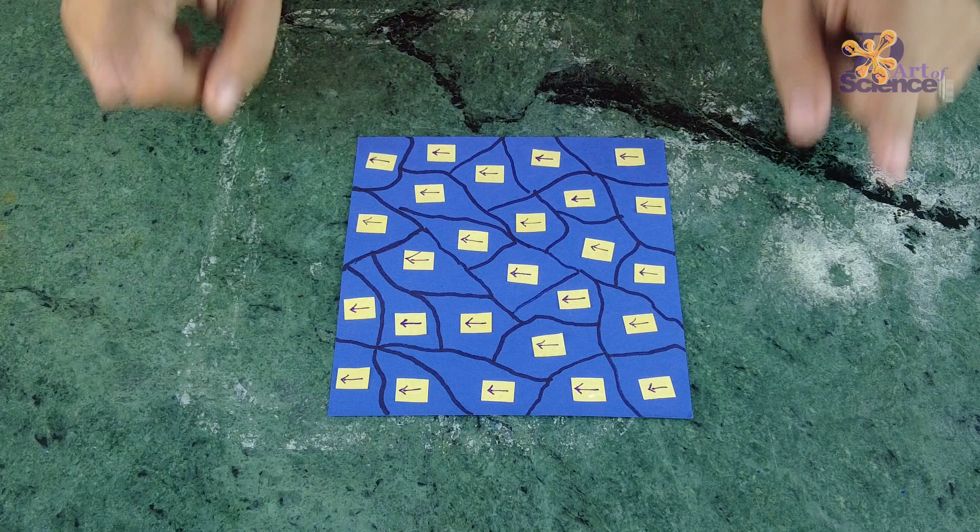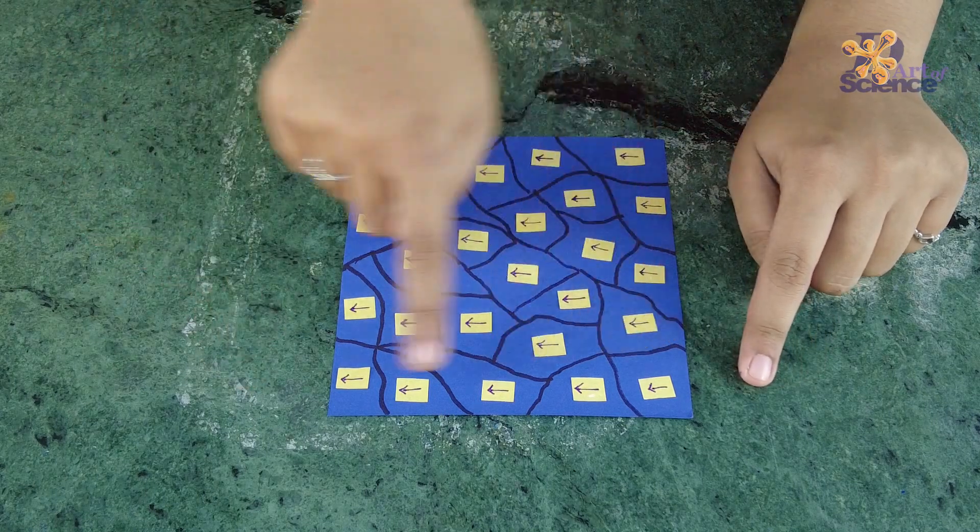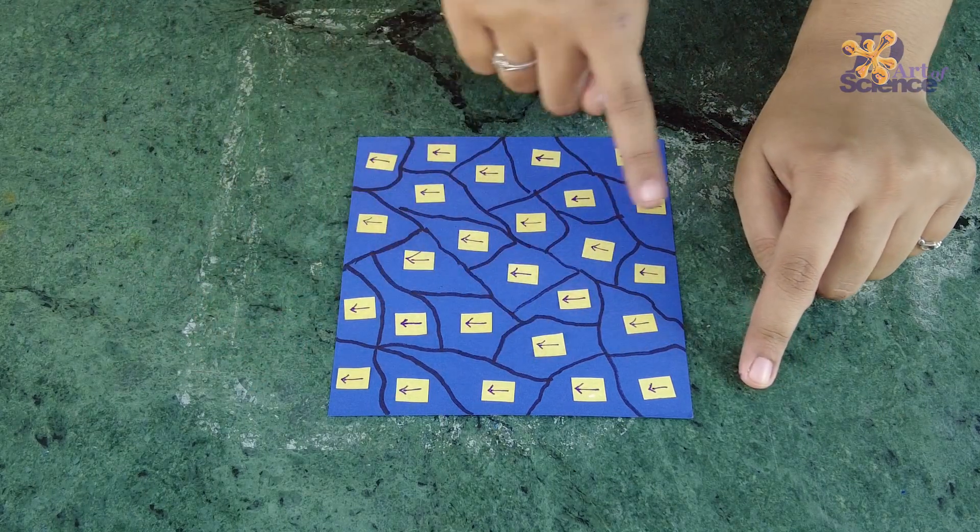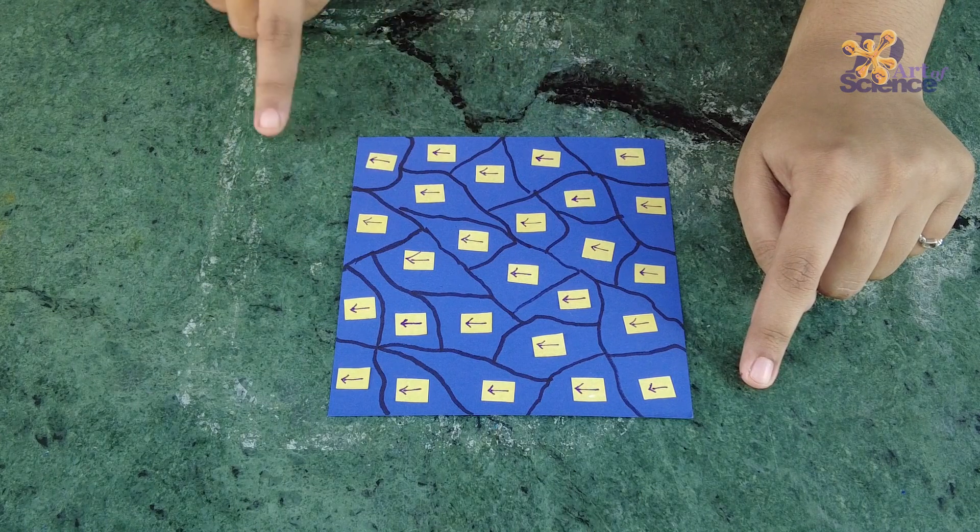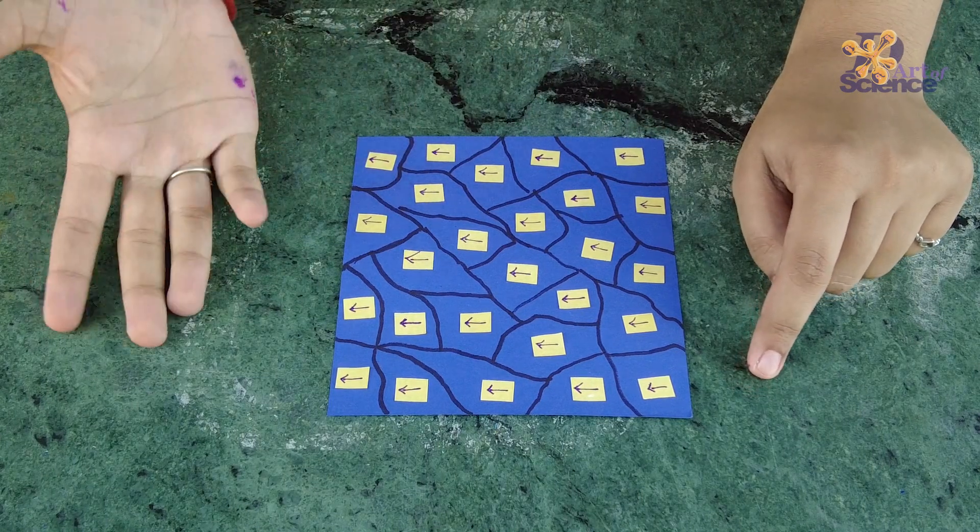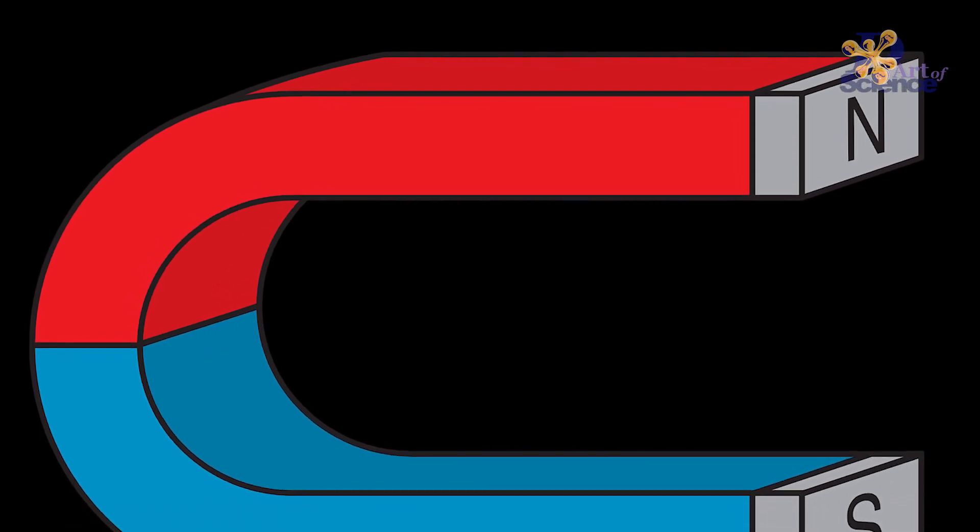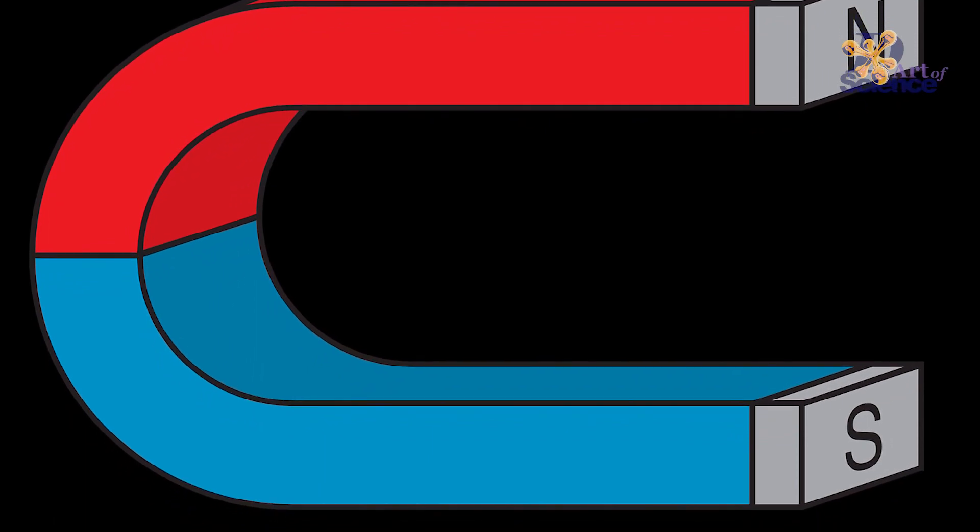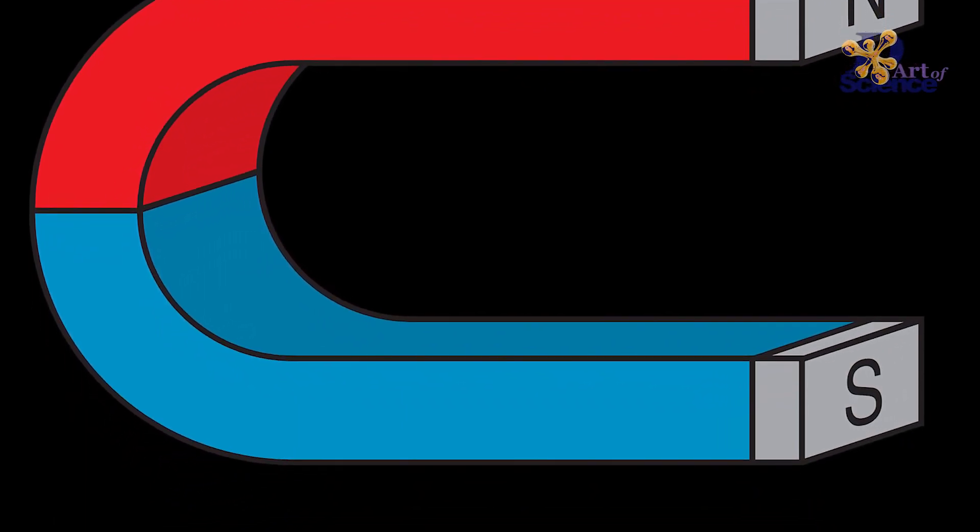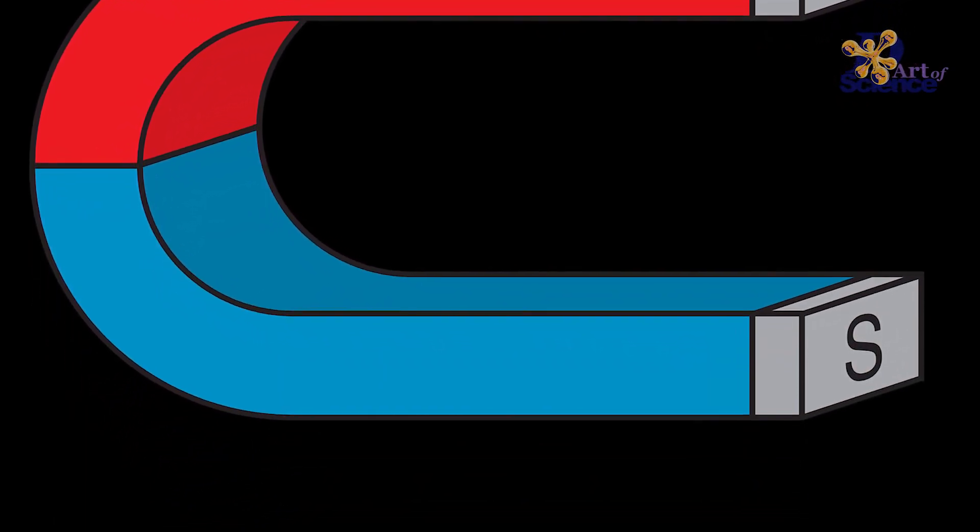However, in the case of a magnet, they are all pointing in the same direction, which gives us the north pole and the south pole. So, a magnet basically has an invisible force around it called the magnetic field lines. But what if I told you we can actually make this invisible force visible?